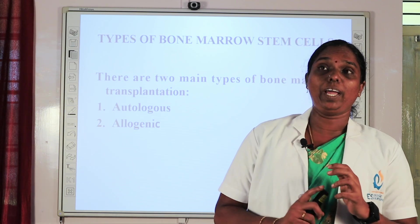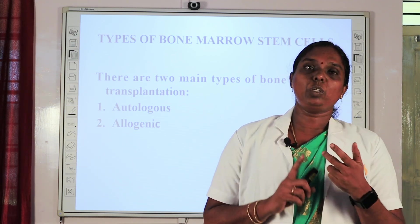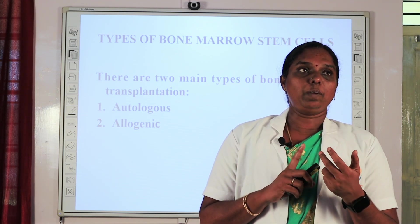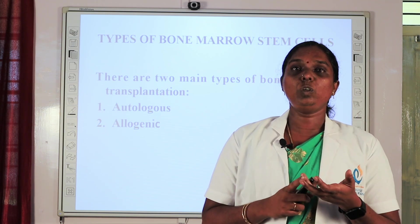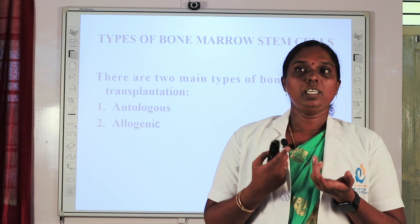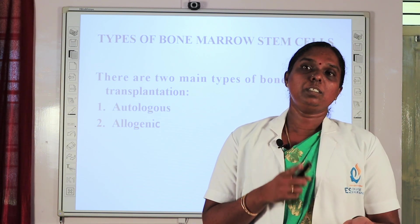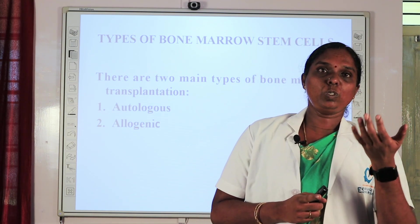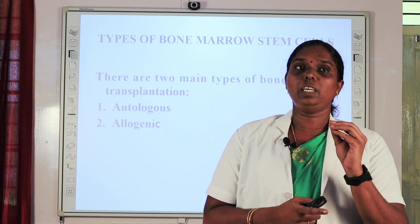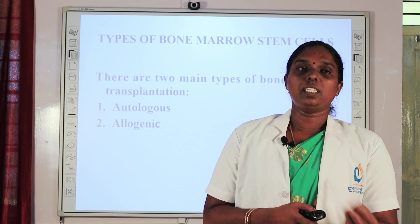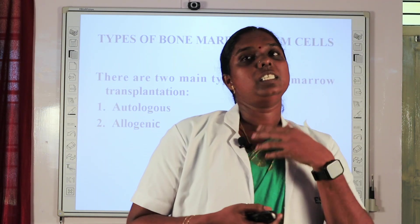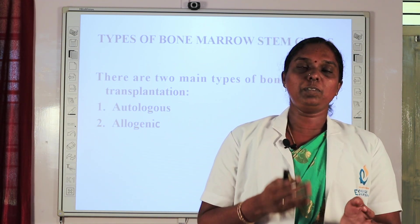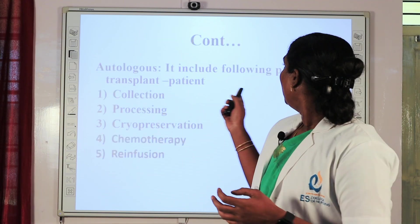There are two types of bone marrow stem cell transplants: autologous and allogeneic. Autologous means a procedure in which the patient receives their own stem cells. The stem cells are collected from the patient before treatment and stored, and then re-infused after treatment.